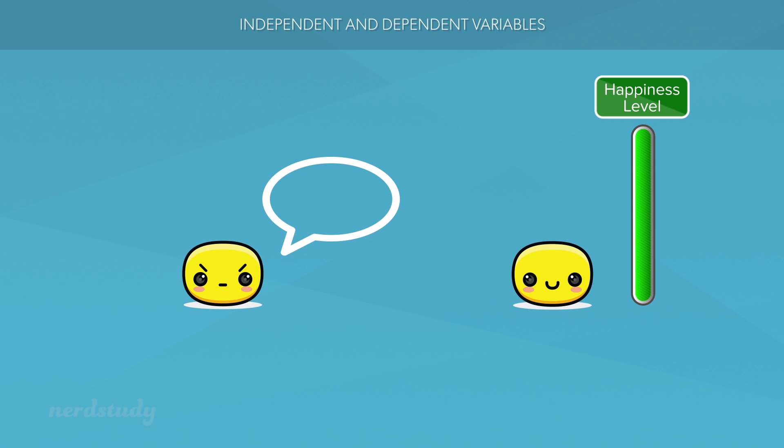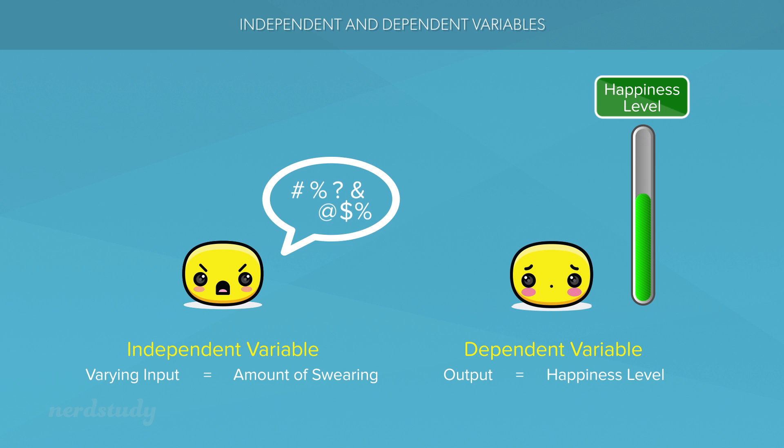you'd expect to see a completely different relationship. First of all, our independent variable, or shall I say our varying input, is the amount of swearing that's being done. And the outcome that we want to observe is the happiness level of the other person. I can generally assume that the more you swear at a person, the less happy the other person is likely to become.